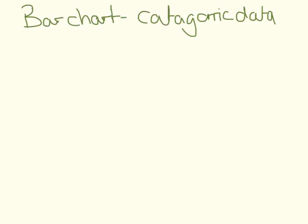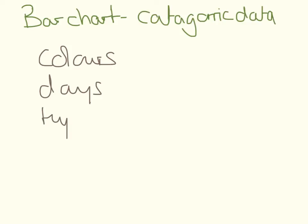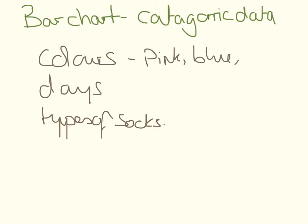By categorical data I mean things like colours, days, and types of socks. With colours we can have pink, blue, or black, but we can't have pink and a half. We can't have blue and a half or black and a half. There's not really anything in between pink and blue — it's either pink, blue, or black. It's one or the other.